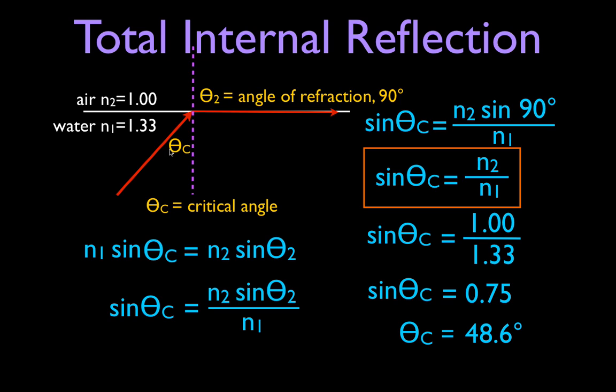The sine of 0.75 gives us 48.6 degrees. So if I shine the light so that it makes an angle with the normal line of 48.6 degrees, it will travel right along that boundary. If I increase the angle of incidence to greater than the critical angle — greater than 48.6 degrees — then I will have total internal reflection, where all of the light is reflected off that boundary and none of it is transmitted. For air and water, that critical angle is always 48.6 degrees. If we change either of those two materials, we'll get a different critical angle.